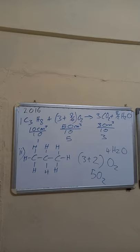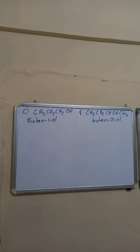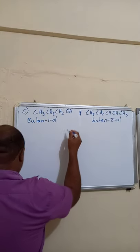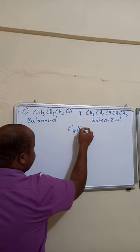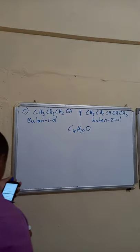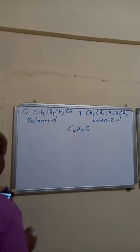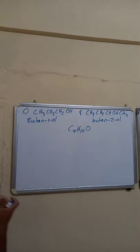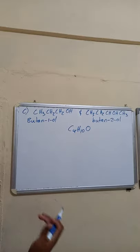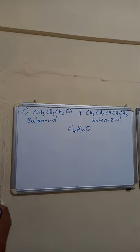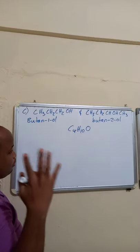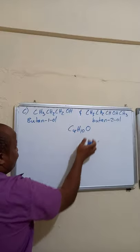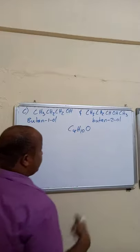Now we move to part C. The molecular formula C₄H₁₀O has four isomeric alcohols. Two structures — butan-1-ol and butan-2-ol — have already been drawn. The question asks us to write the name and displayed formula for each of the other two alcohols.